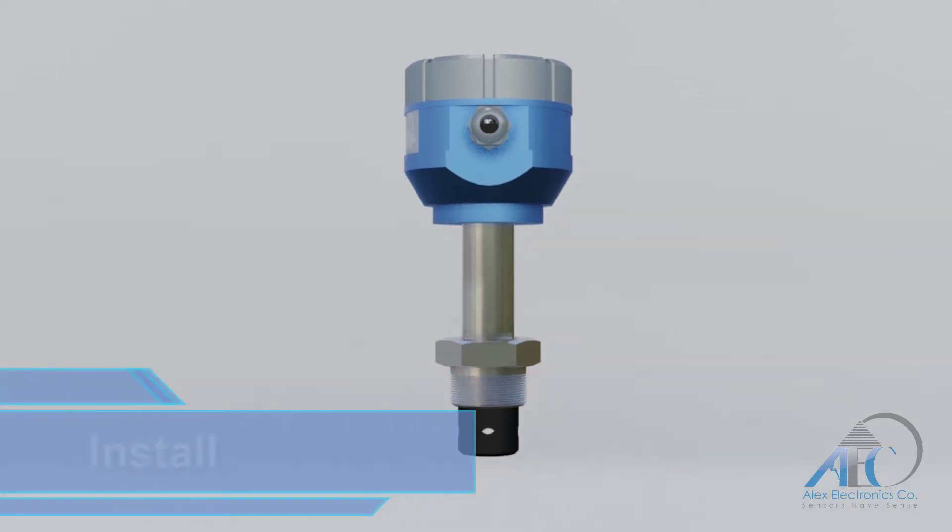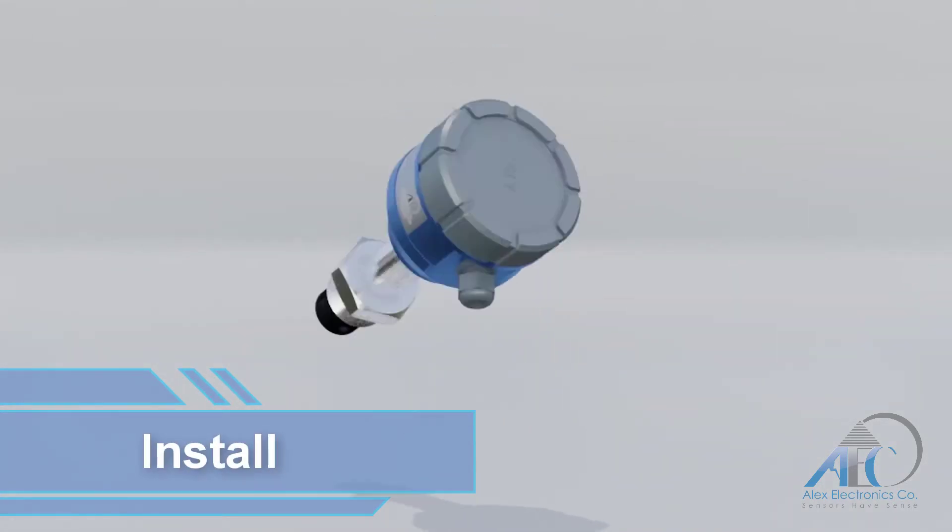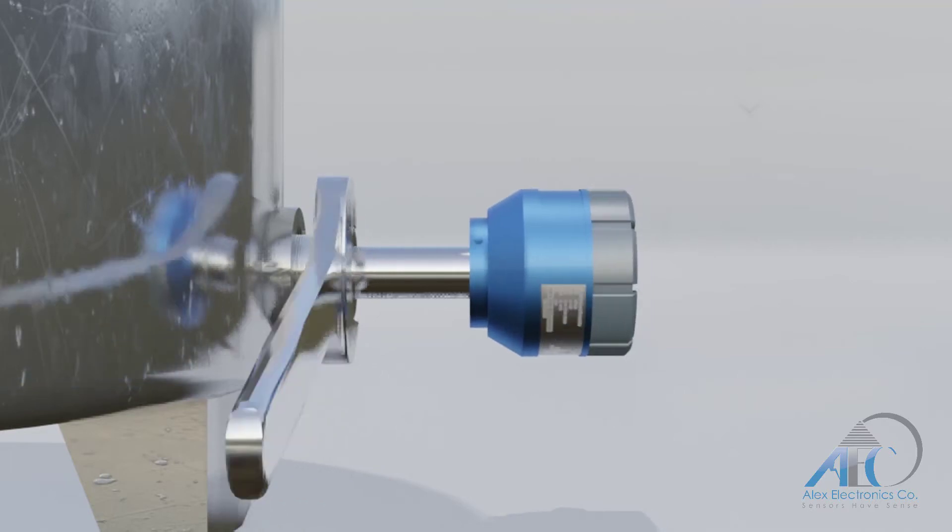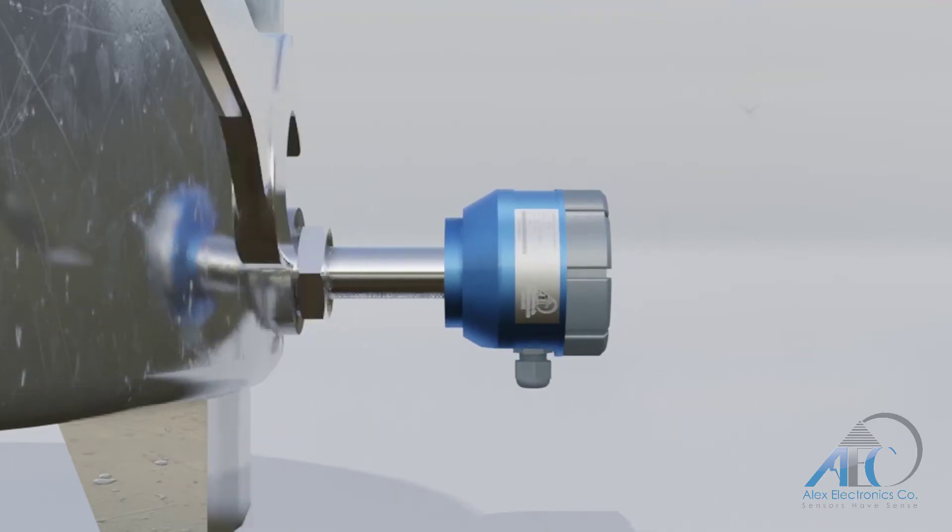First you need to install the device at the lowest point or the zero point of your vessel. Make sure to use a wrench or a suitable tool to screw the fitting in and not use the sensors body.